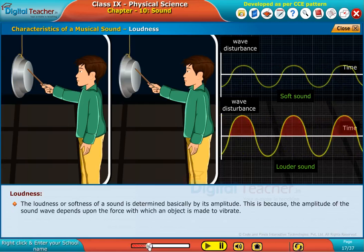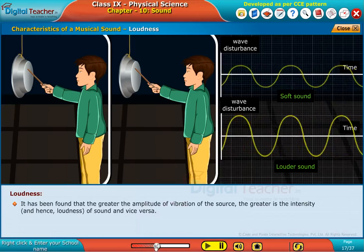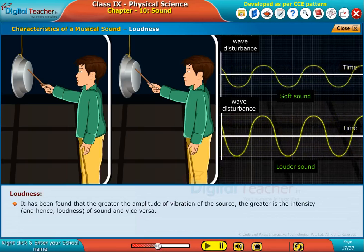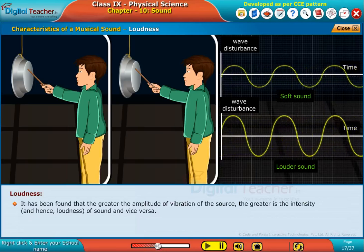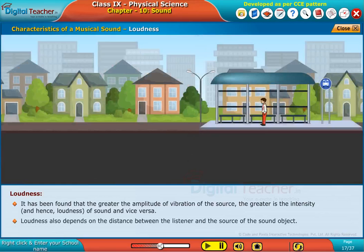The force with which an object is made to vibrate, and the concentration of the source, determines the greater intensity and hence the loudness of the sound. Loudness also depends on the distance between the listener and the source of the sound.